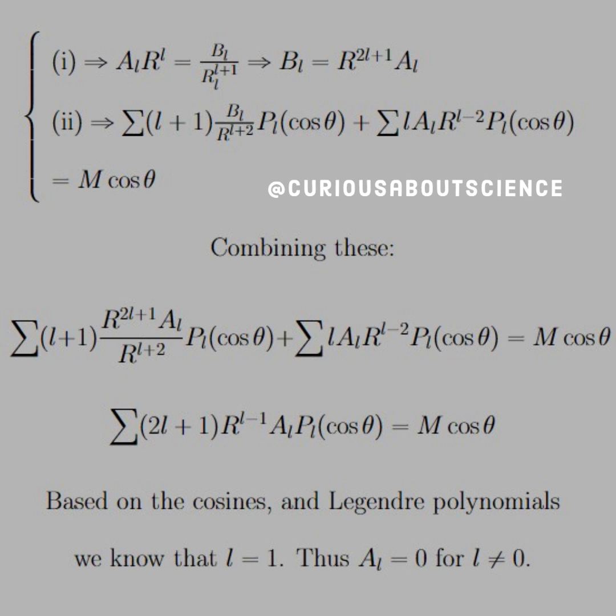Substituting in one into two and solving or combining these two equations, we see that we get a simplified form of the summation of 2L plus one of R to the L minus one times ALPL, where it's Legendre polynomial, equals M cosine theta. Based on the fact that we have a cosine theta on the right-hand side, that tells us which order of the Legendre polynomial we need, and that is L equals one.